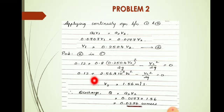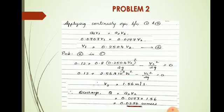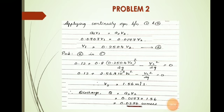Solving for v2, we get v2 equal to 1.56 meter per second. The discharge Q is equal to a2 times v2. So Q equals 0.0177 times 1.56, which gives a discharge of 0.0276 cubic meters per second.